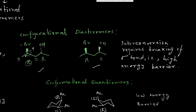These two diastereomers are also interconvertible only via sigma bond cleavage. If you break the O-H bond and interchange the hydrogen and OH groups, you can attain the other molecule, but this requires breaking two sigma bonds. This is a highly energy-consuming process, which is why these two are configurational diastereomers.